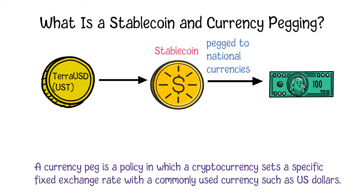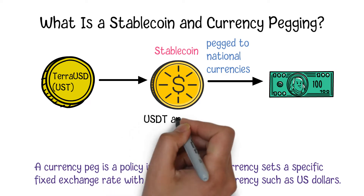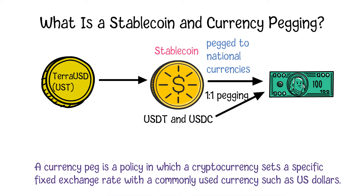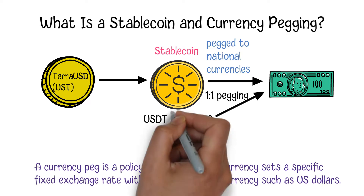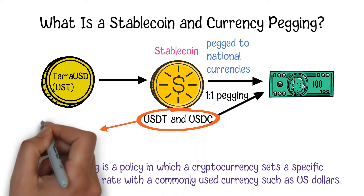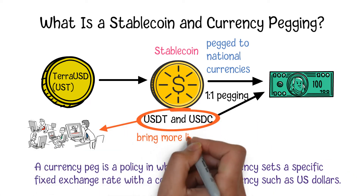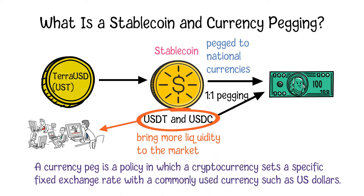Nowadays, most popular stablecoins on the market, such as USDT and USDC, are pegged 1 to 1 to the US dollar. Stablecoins play an important role in the crypto economy, which can bring more liquidity to the market. Traders can use those stablecoins as an anchor to the US dollar without the need to worry about the exchange rate.